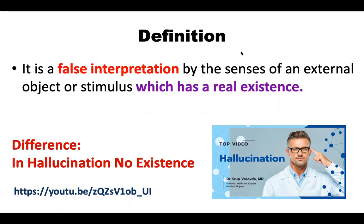Hallucination aur illusion mein difference hai. They both are false interpretations. But in hallucination there will not be any real existence, while in illusion real existence hota hai. Par kuch galat perception ya to phir galat interpretation hota hai.